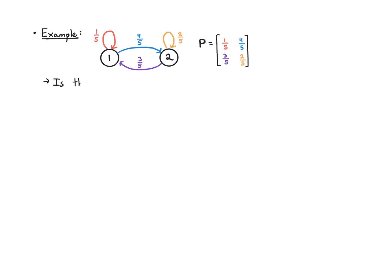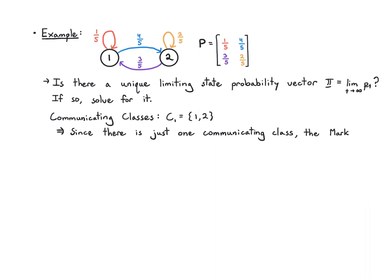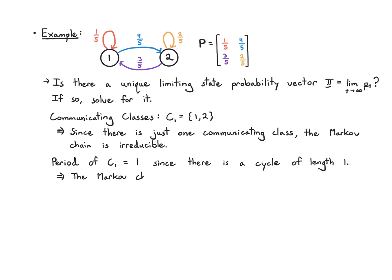Let's do a simple example. We're coming back to a Markov chain with two states. Does it have a unique limiting state probability vector pi — the limit as t goes to infinity — and if so, solve for it. The communicating class is just the single class {1, 2}, so the chain is irreducible. The period of this class is 1 since there is a self-loop on state 1, so the chain is aperiodic.